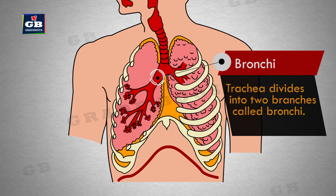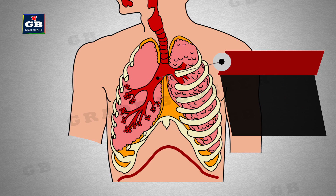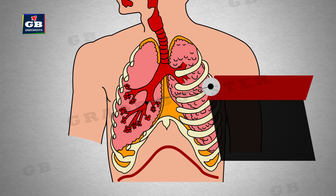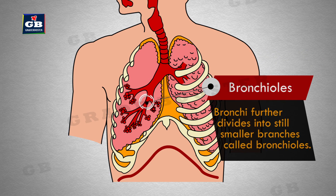Bronchi: the trachea divides into two branches called bronchi. Bronchioles: the bronchi further divide into still smaller branches called bronchioles.